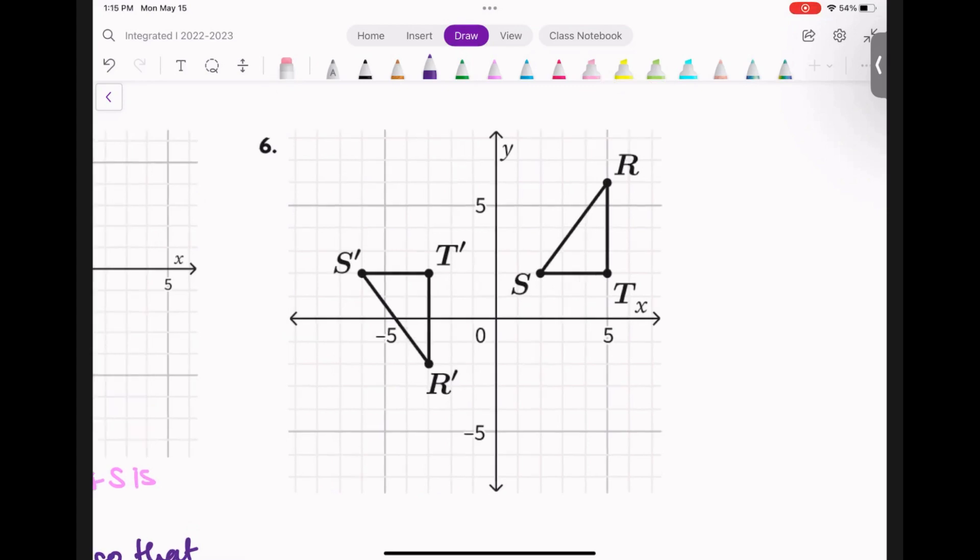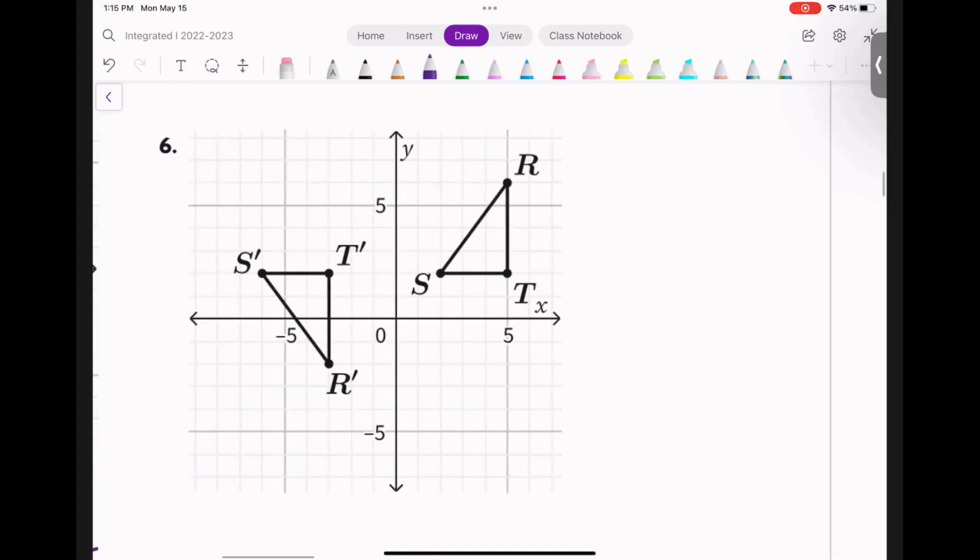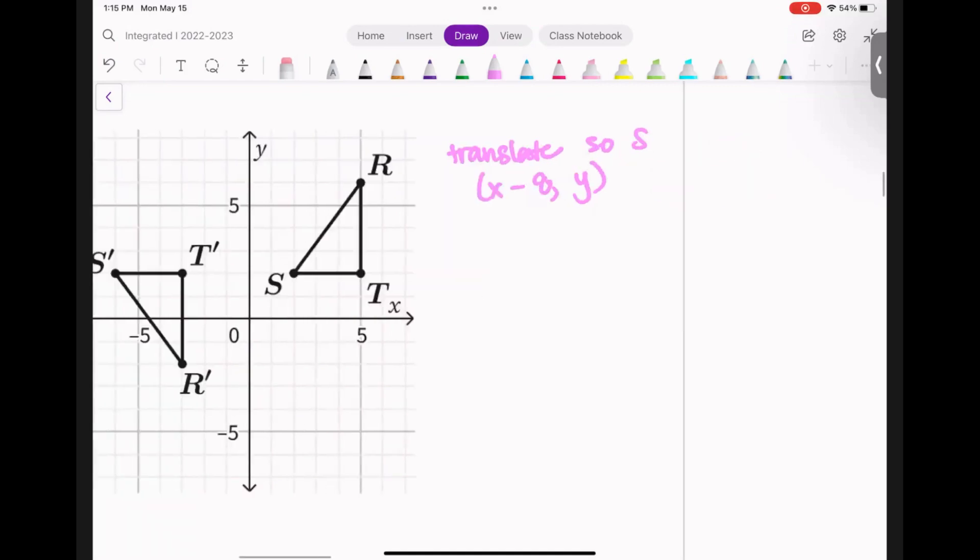All right, so if you were going to do this one, what would you first do? What's the first thing that you guys said that you would do first? Someone said translate, okay, I'll take translate. Okay, someone gave specific number directions. You can also do that. So someone said translate x minus eight, y. And you could do that. You could also write translate so S and S prime coincide.